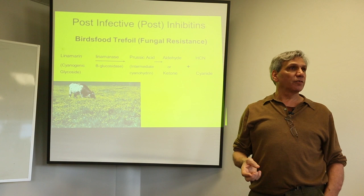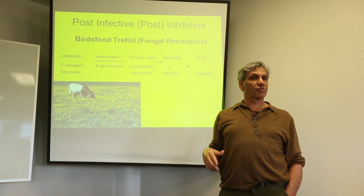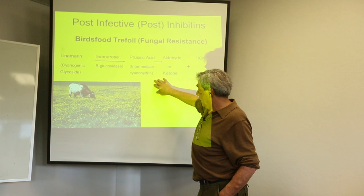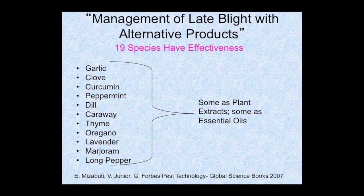Birds foot trefoil, a legume, is very susceptible to mildews. It produces a cyanogenic glycoside — note the word 'cyanide' in there — so legumes like string beans and soybeans produce cyanide because they're very susceptible to powdery mildews. An enzyme converts the cyanogenic glycoside into a much more potent cyanide that actually kills the mildews.